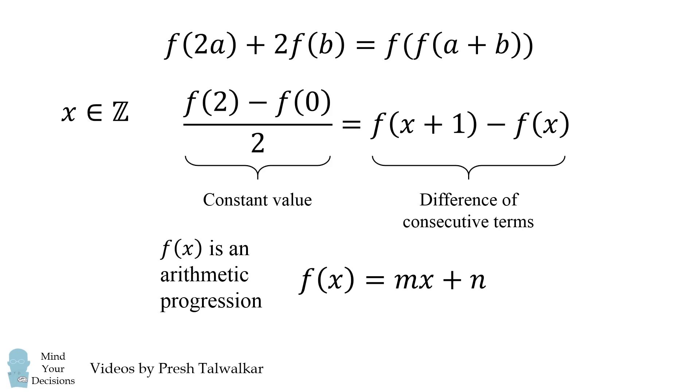This means we have an arithmetic progression because the difference of consecutive terms will be some constant value. This means F of X can be written as the linear equation M times X plus N.